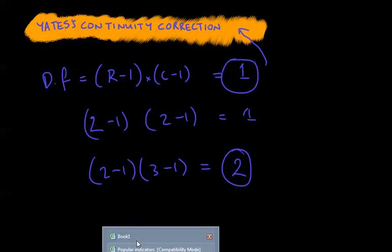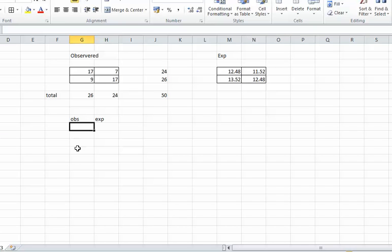Right, so that's enough of me waffling on about that. Let's actually work out Yates' now. First of all, I'm just going to copy the numbers in, so 17 is this cell here, the corresponding cell is 12.48, I'm just going to write it next to it. 7 is the next cell along, it doesn't matter what order you do it in, but the corresponding cell has to be the one next to it, 11.52, 9, the corresponding cell is 13.52, and 17 and the corresponding cell is 12.48.